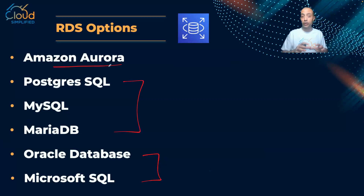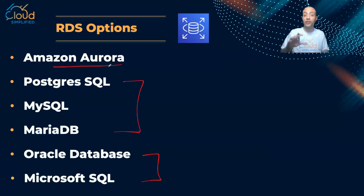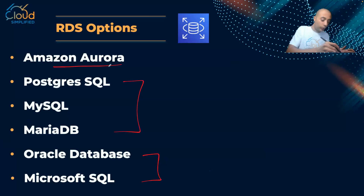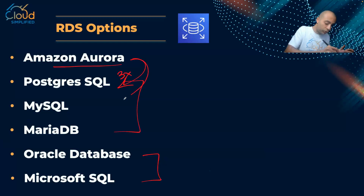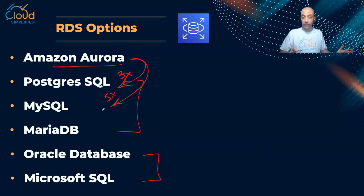Because of this trade-off, AWS created Amazon Aurora, which combines the best of both worlds: it is an enterprise-grade database that is also very cost-effective. Aurora comes in two options: one backward compatible with PostgreSQL, which is three times faster than PostgreSQL, and one backward compatible with MySQL, which is five times faster than standard MySQL.